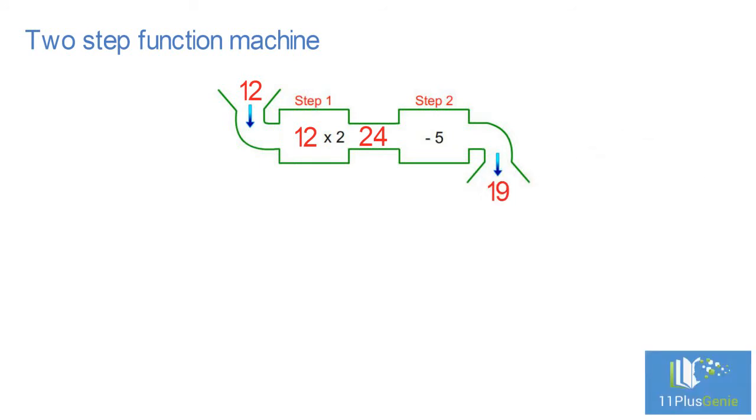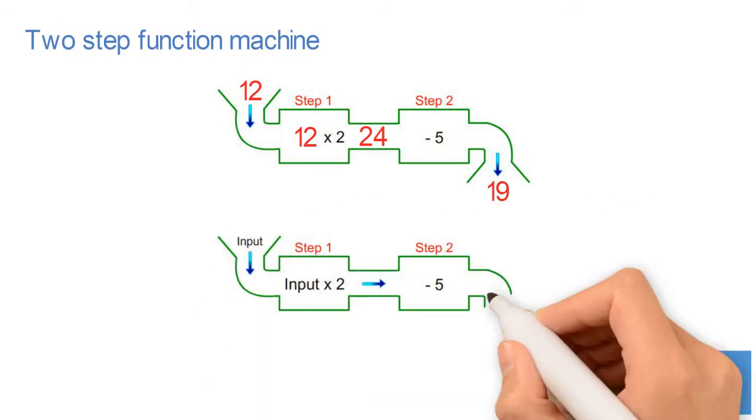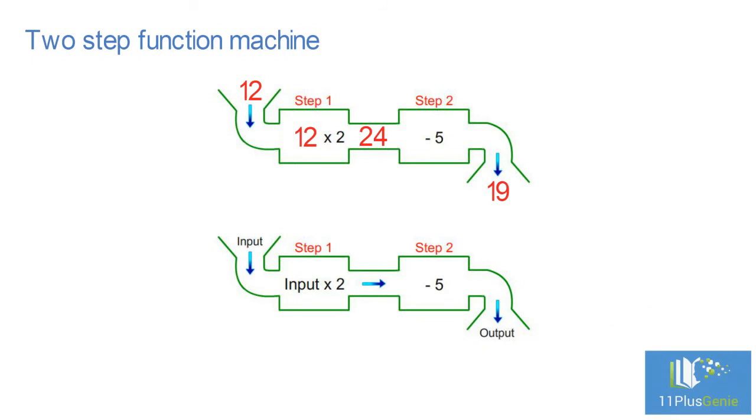The machine now has an output of 139. What was the input? We now need to work from right to left through the machine. The instructions are reversed, so we do the opposite. We first add 5, which gives us 144, and then we divide by 2. 144 divided by 2 equals 72. The input was 72.